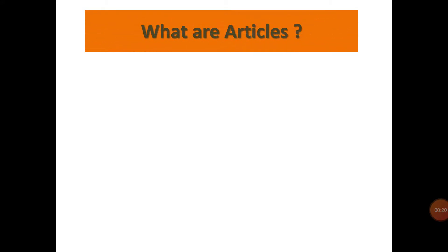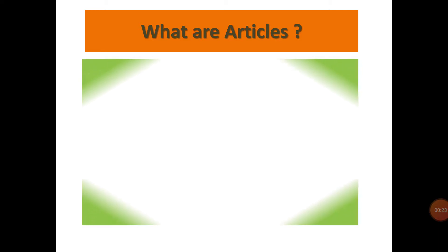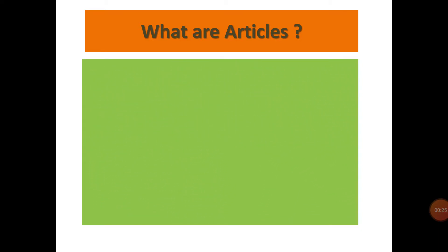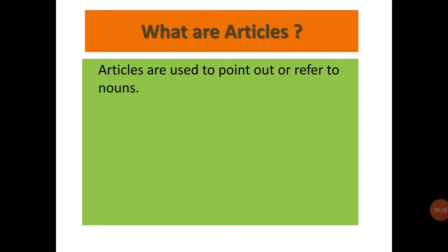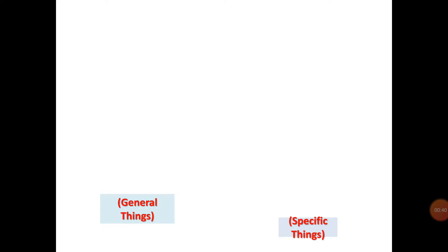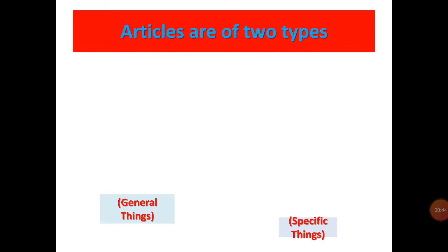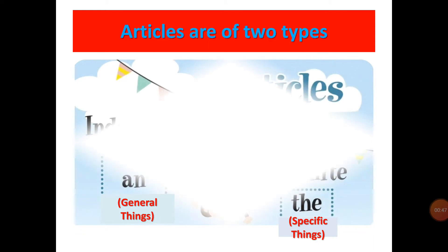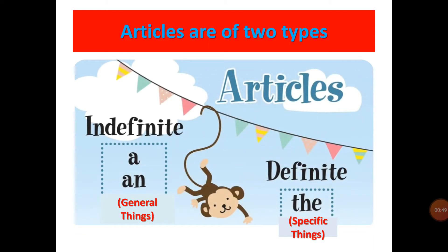Students, do you know what articles are or what is the definition of articles? I will tell you. Articles are used to point out or refer to nouns, and a, an, and the are called articles. Now students, how many types of articles are there? Two types. There are two types of articles: indefinite articles and definite articles.